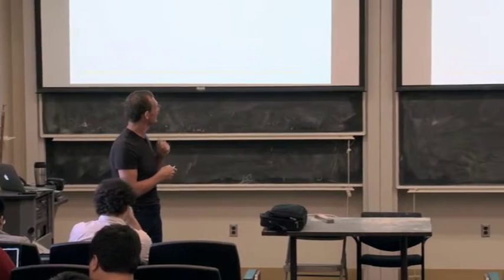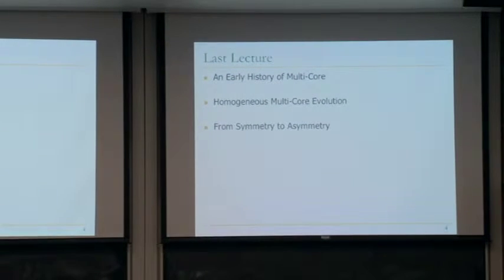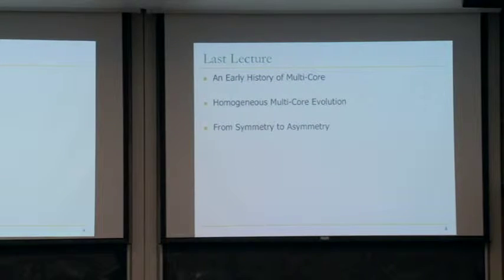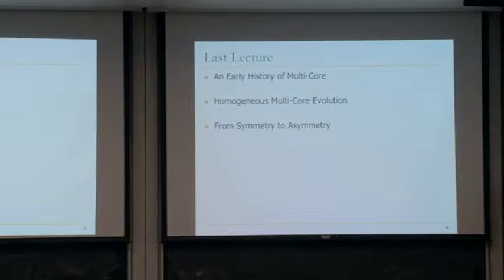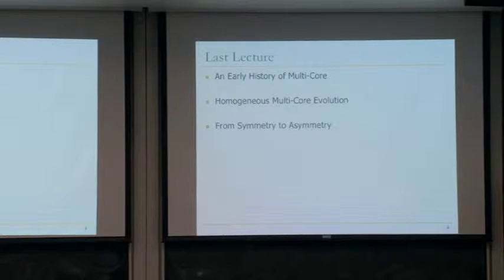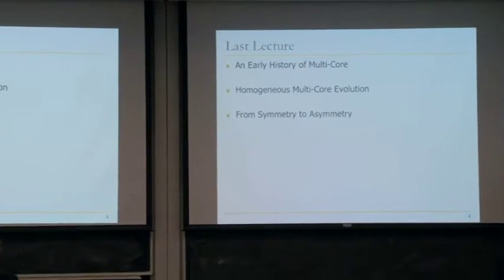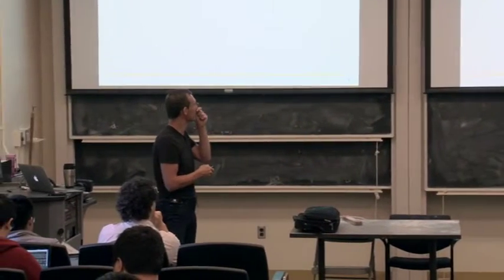Last lecture we covered an early history of multi-core. I gave you the path two big companies have taken: Sun and IBM — one of them is dead, the other is alive. They've taken different paths in multi-core. We talked about homogeneous multi-core evolution, presented within the context of those two companies. They were trying to achieve the best of multiple worlds, but they're not going to get it without some sort of asymmetry. In fact, they moved to asymmetry also — frequency boosting is one way of achieving asymmetry, and we will cover the paper that described that first.